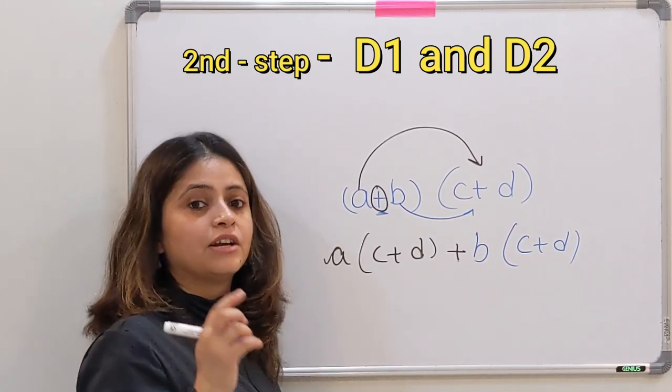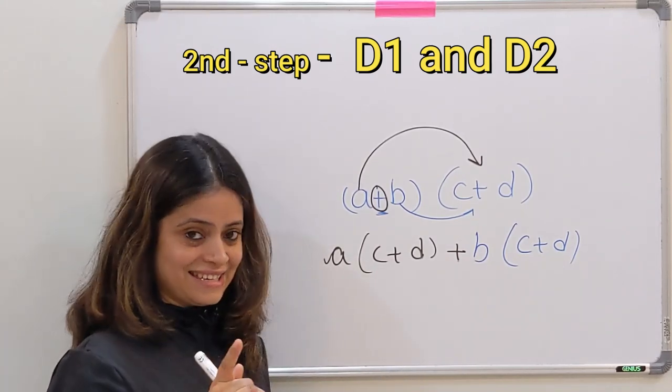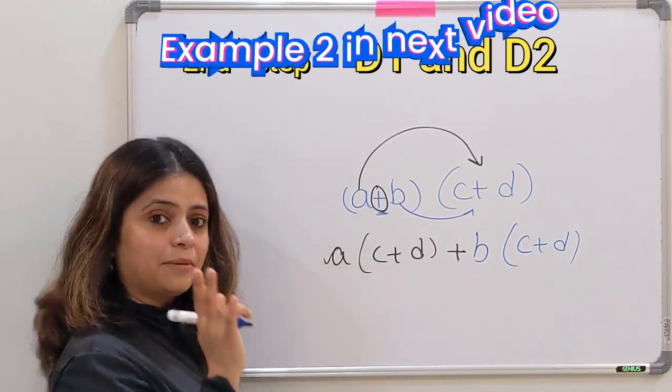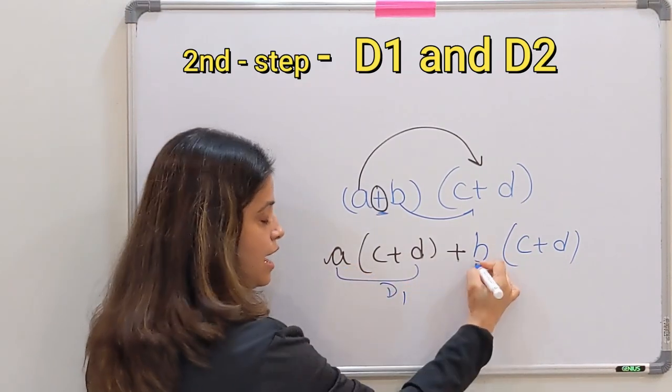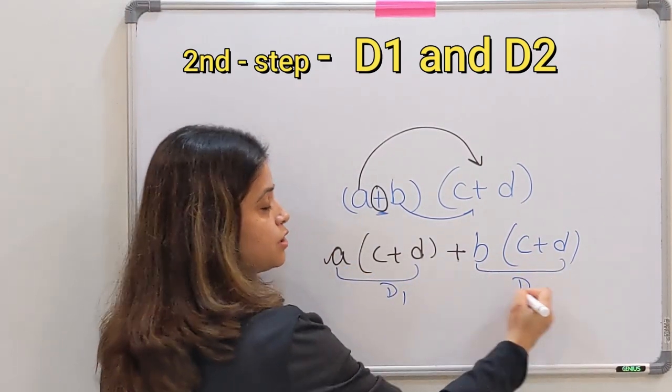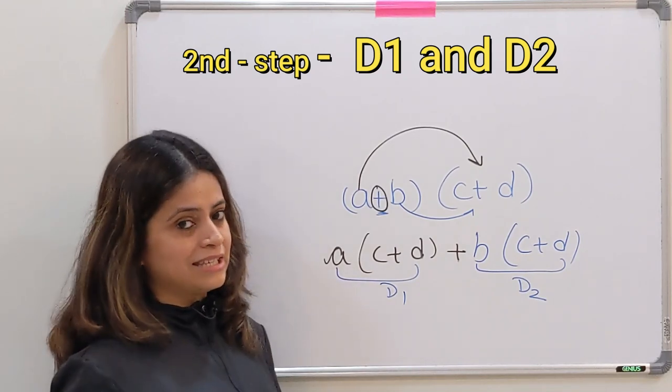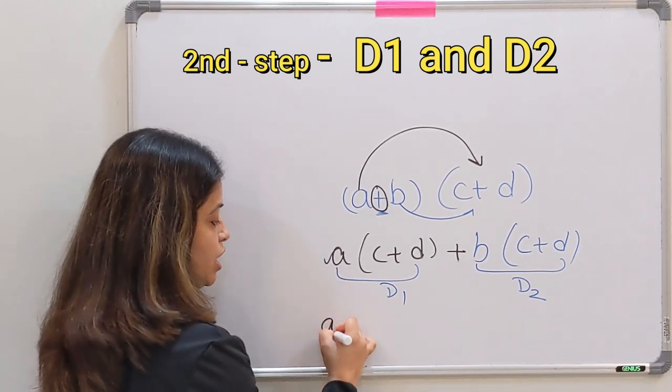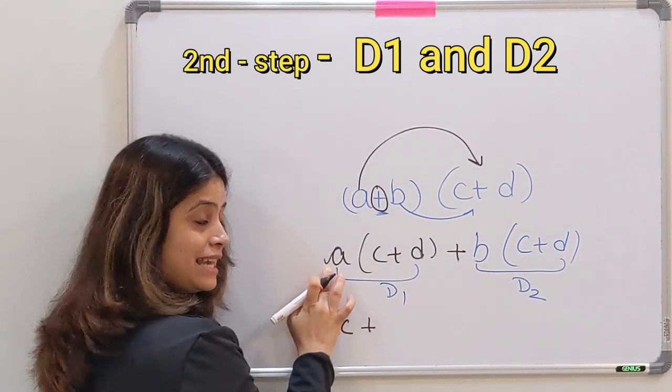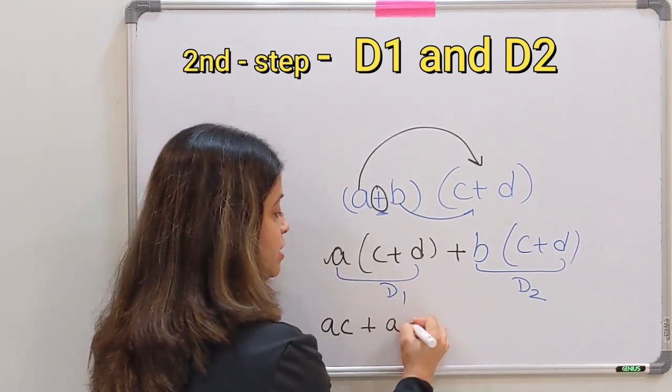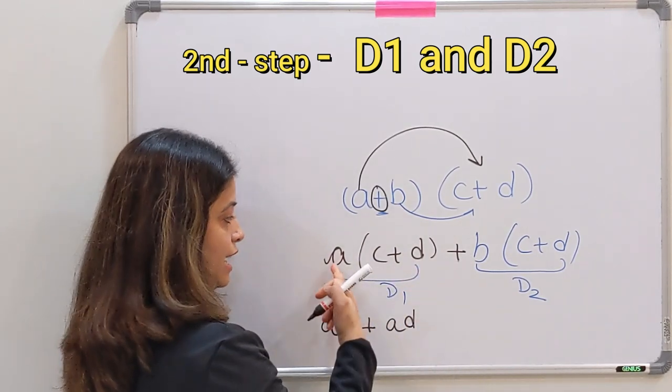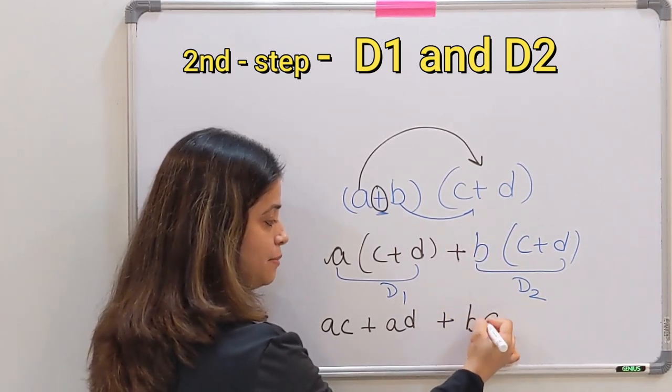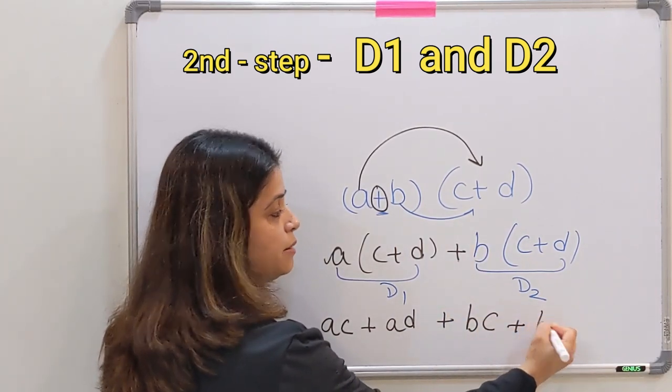Hide and seek. Next step is D1 D2. D1 D2 means distributive property. Yes, the one which we have discussed in our last video. Distributive property kitni baar lagana hai? Two times: D1 yaha and D2 yaha. So this is D1 D2 step. How will you solve this? Distributive property: A will shake hand with C, plus this A will again shake hand with D.